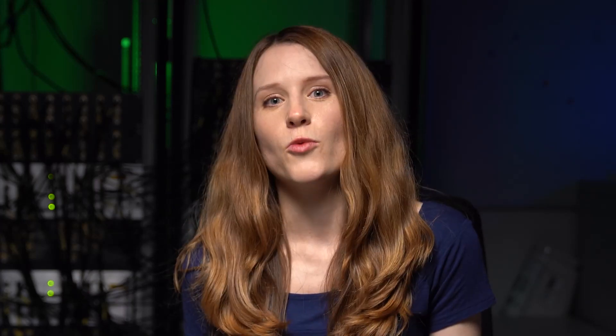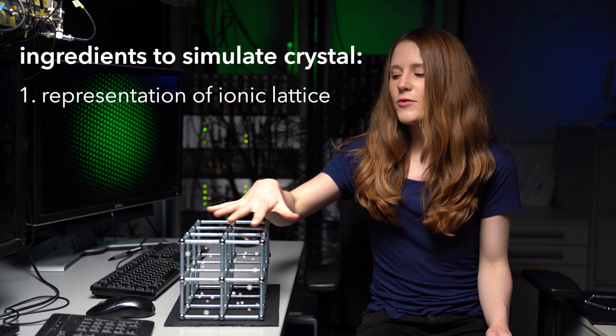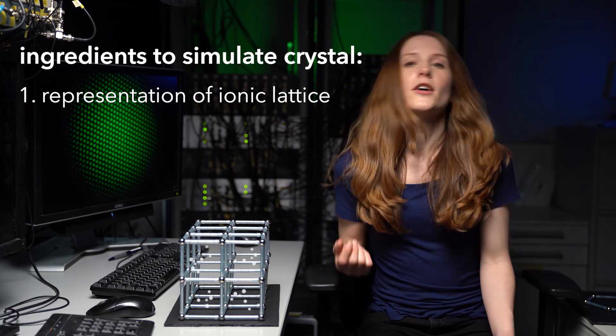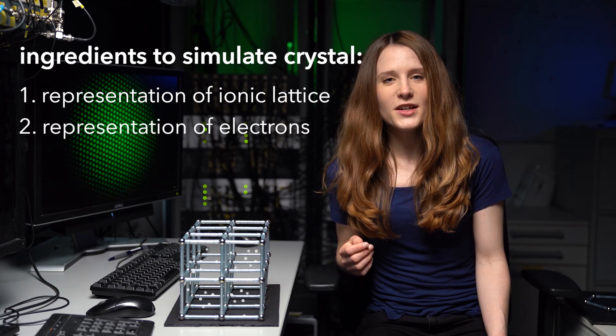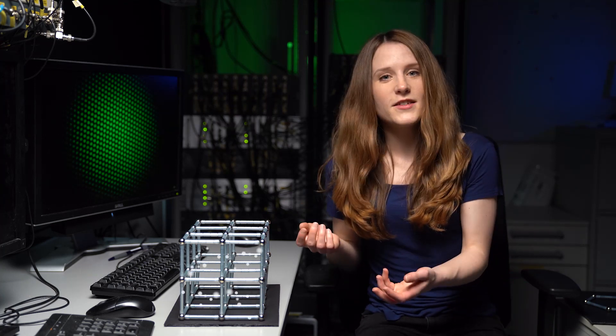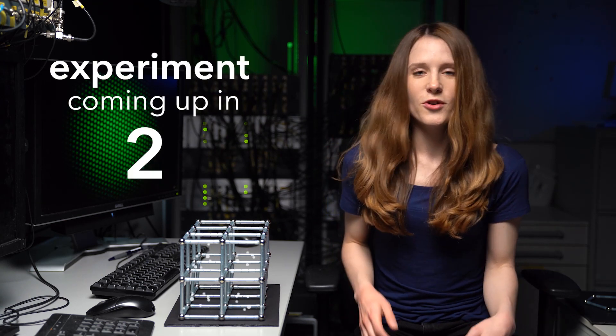So this means by observing our model system which is called the quantum simulator we can learn about what is going on inside these special materials to understand them better. To simulate such a high TC superconductor for example we need two ingredients. First we need something that represents this ionic lattice. And second we need some particles that can move around in the lattice to play the role of the electrons. So the cool thing is now that we can build something similar to these lattices just using laser light. I've prepared a little experiment to show you how this works.